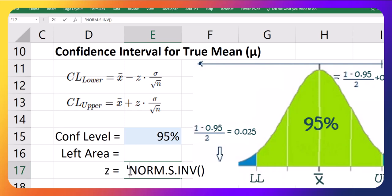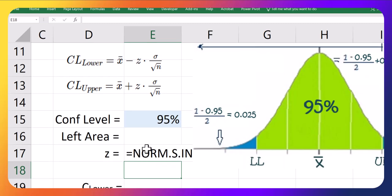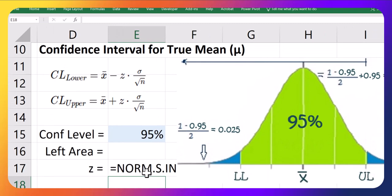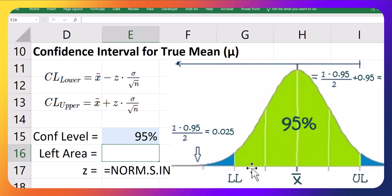Within that, I'm going to need to have the area to the left of my desired z-score. So let's go talk about that first. So we're going to come back to this Excel call. Before we do that, we need to figure out what the area to the left of either of these limits is.